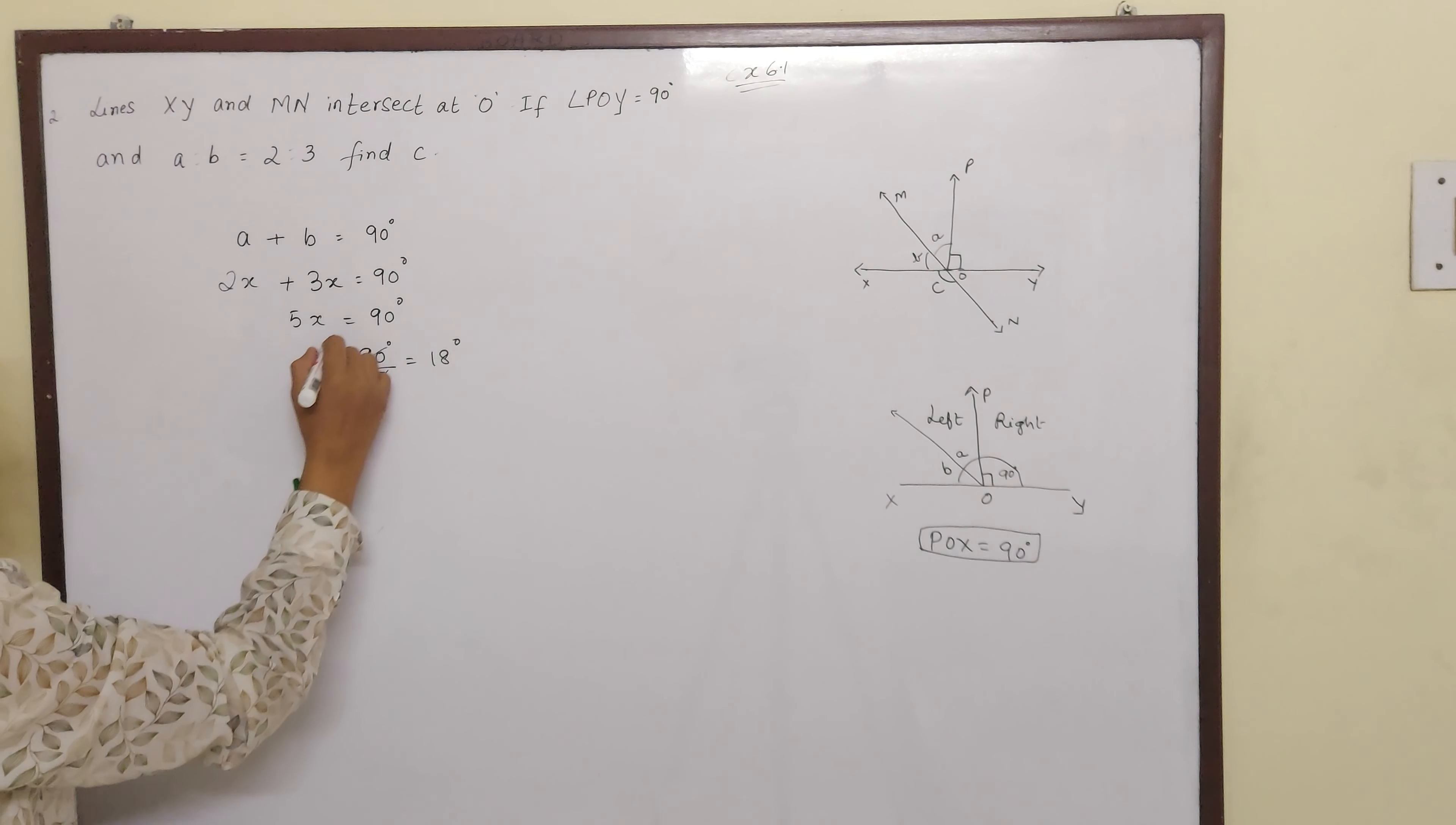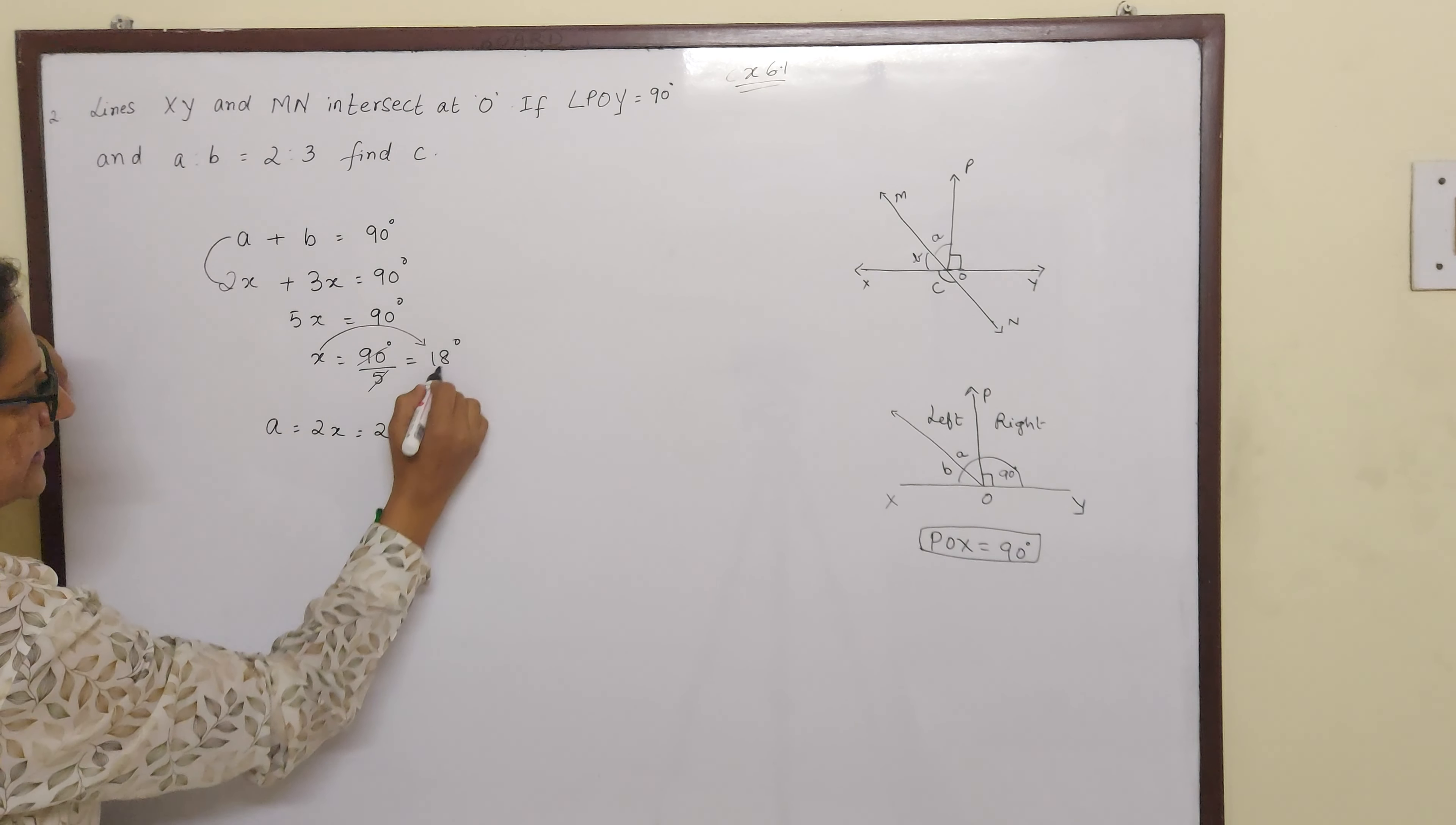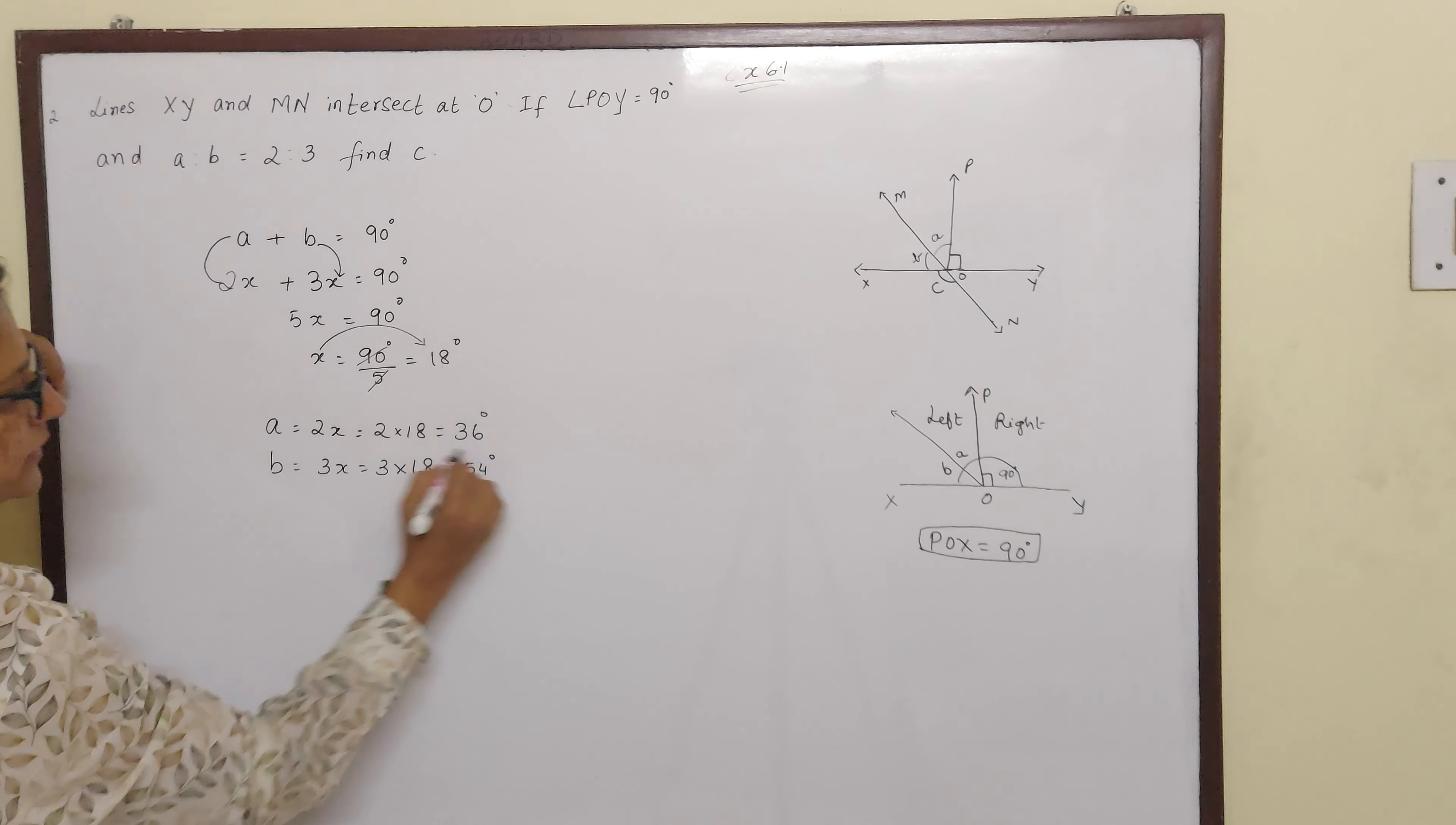So the value of X is 18. That means the value of A is 2X which is 2 into 18 which is 36 degrees. Value of B is 3X, 3 into X which is 3 into 18 which is 54 degrees.